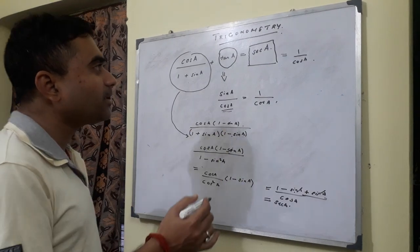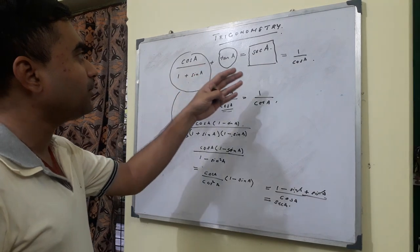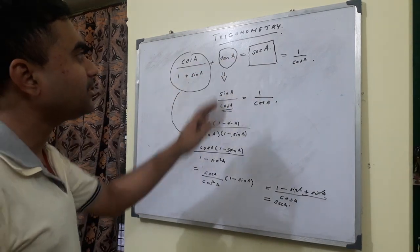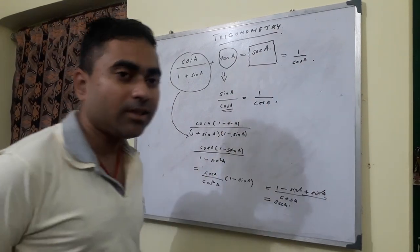This is a trigonometric identity in which I have to prove the right hand side is equal to the left hand side. If we look at the right hand side, it is written sec A. Now sec A is 1 by cos A.